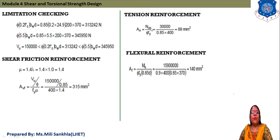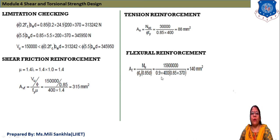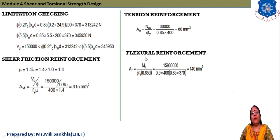Next, calculate tension reinforcement AN = NUC / (phi × Fy) = 30,000 / (0.85 × 400) = 88 mm². Then, flexural reinforcement AF = MU / (phi × Fy × 0.85D) = (1.59 × 10^7) / (0.85 × 400 × 0.85 × 370) = 140 mm². We have found three reinforcements: shear (AVF), tension (AN), and flexural (AF).